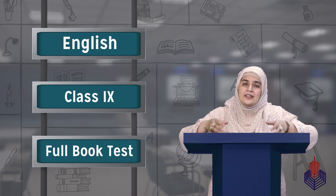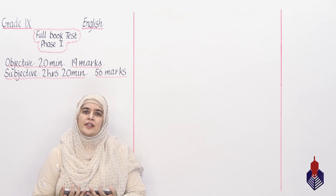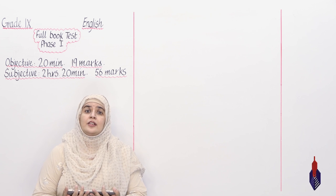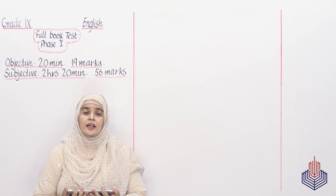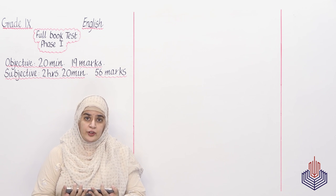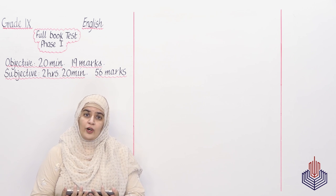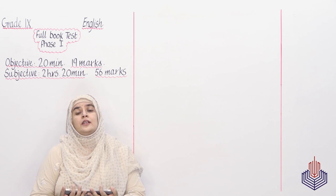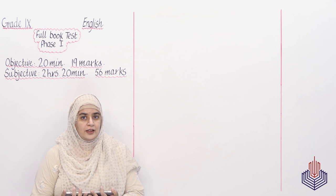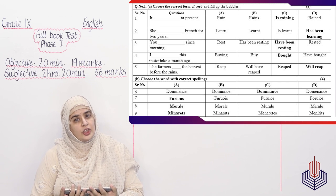So without further ado let's start the test paper. You already know that your paper is divided into two parts: objective and subjective. Objective is carrying 19 MCQs, multiple choice questions, and 19 marks. You are getting 20 minutes to solve the paper. Subjective part is comprising of different questions and you have 2 hours and 20 minutes to solve the paper for 56 marks. Aapka syllabus bohat short hai. Aapke paas time bohat zyadha hai. Achhe se prepare karo, inshallah aap log maximum marks gain karo ge.